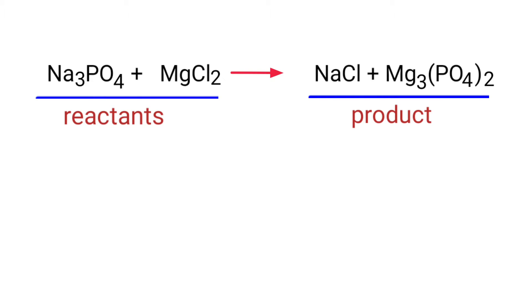In this equation, the reactants are trisodium phosphate and magnesium chloride, and the products are sodium chloride and magnesium phosphate. If you look at this equation, the equation is not balanced.